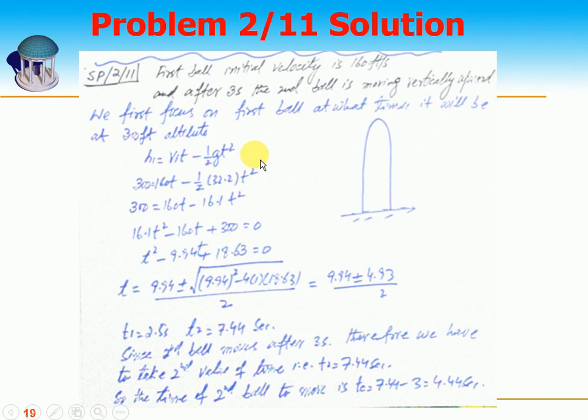The first ball has an initial velocity of 160 feet per second. We first focus on ball 1 — at what time will it be at 300 feet altitude? According to Newton's equation of motion, since acceleration is constant at G and the ball is moving upward, we use minus G. So H1 equals V1·T minus half·G·T². With H1 equal to 300 feet, we substitute.